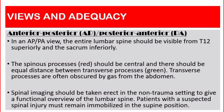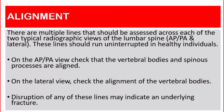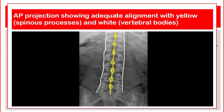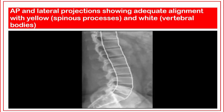Patients with a suspected spinal injury must remain immobilized in the supine position. Alignment: There are multiple lines that should be assessed across each of the two typical radiographic views — anterior-posterior, posterior-anterior, and lateral. These lines should run uninterrupted in healthy individuals. On the AP or PA view, check that the vertebral bodies and spinous processes are aligned. On the lateral view, check the alignment of the vertebral bodies. Disruption of any of these lines may indicate an underlying fracture.